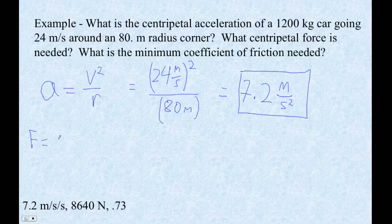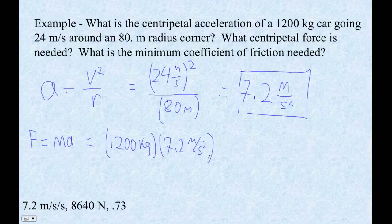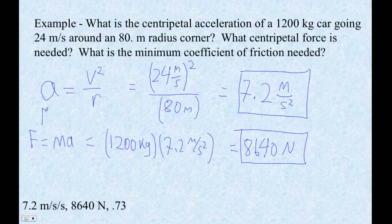And then to find the force, force is easy. Force is just ma. So the mass is 1200 kilograms, and the acceleration is 7.2. So I'm just going to go times 1200, and that's 8640 newtons. So there's our centripetal force. And we can actually say F equals mv squared over r if we want to make a separate formula for centripetal force.